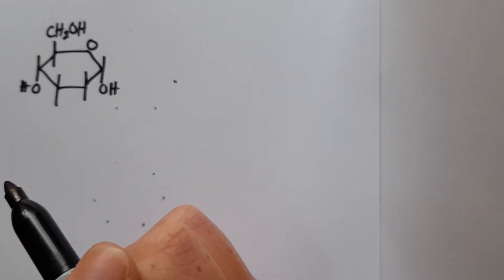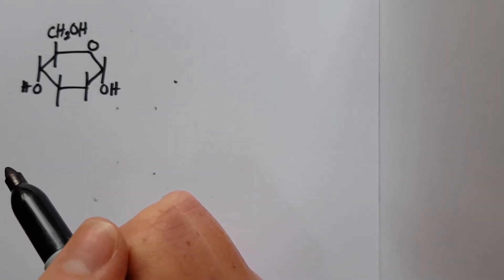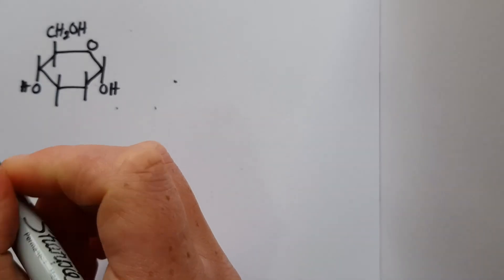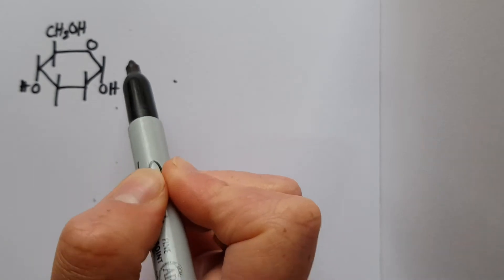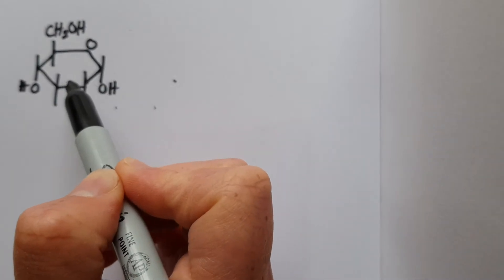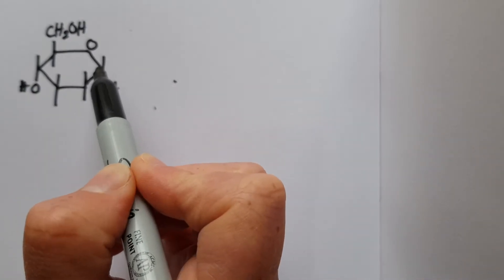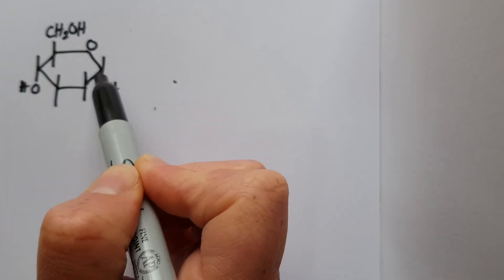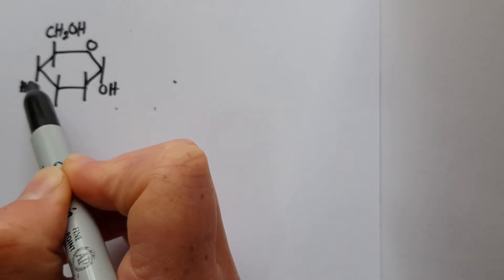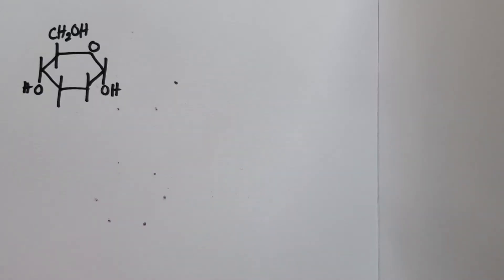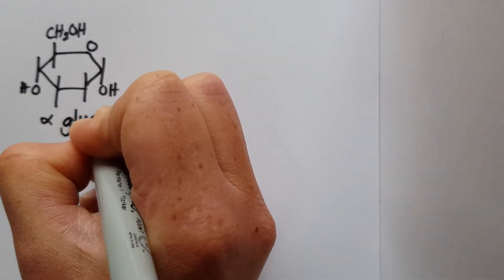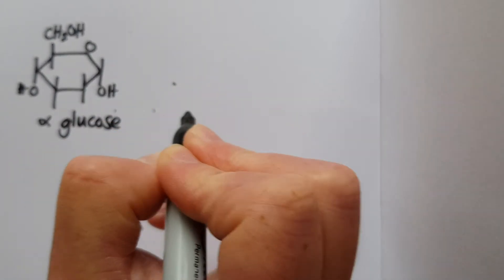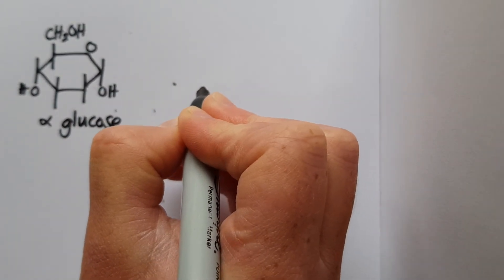Here I'm going to show you how a disaccharide forms. Hopefully you now recognize this molecule as the simple version of alpha glucose. We've got our six carbon sugar with hydroxyls pointing downwards at carbon one and carbon four. This is alpha glucose, and alpha glucose can actually bond with another molecule of alpha glucose.